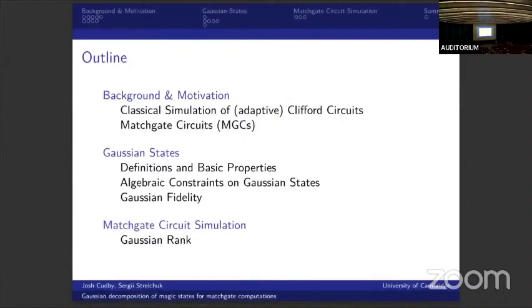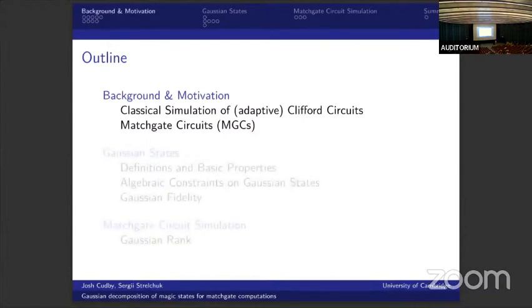So just to give a quick outline of what I'll talk about today. We're going to start with some background and motivation — I'll talk a little bit about classical simulation of Clifford circuits, and then give some background on matchgate circuits and matchgate computations. I'll then talk about Gaussian states, give some definitions, talk about algebraic constraints on Gaussian states, and quickly discuss the Gaussian fidelity. Finally, I'll talk about matchgate circuit simulation and in particular the Gaussian rank.